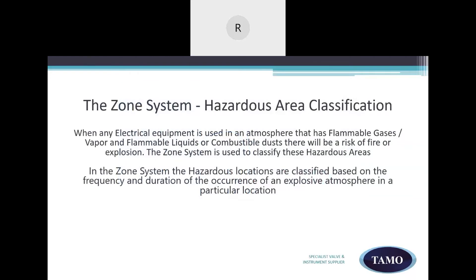Let's look at the zone system. When any electrical equipment is used in an atmosphere that has flammable gases or vapor and flammable liquids or combustible dusts, there will be a risk of fire or explosion. The zone system is used to classify these hazardous areas. In the zone system, the hazardous locations are classified based on the frequency and duration of the occurrence of an explosive atmosphere in a particular location.